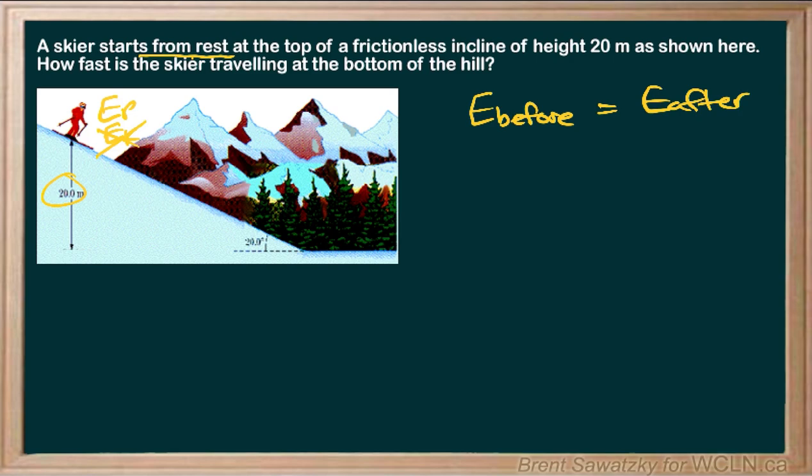And down here, when the skier gets down to the bottom, at that point the potential energy is all gone because now they're down to where we would say the height is zero — it's down at ground level. So EP is zero, we can cross it out. And we're going to have some kinetic energy for sure. So in our equation, we start off with lots of potential energy and it's all converted into kinetic energy.